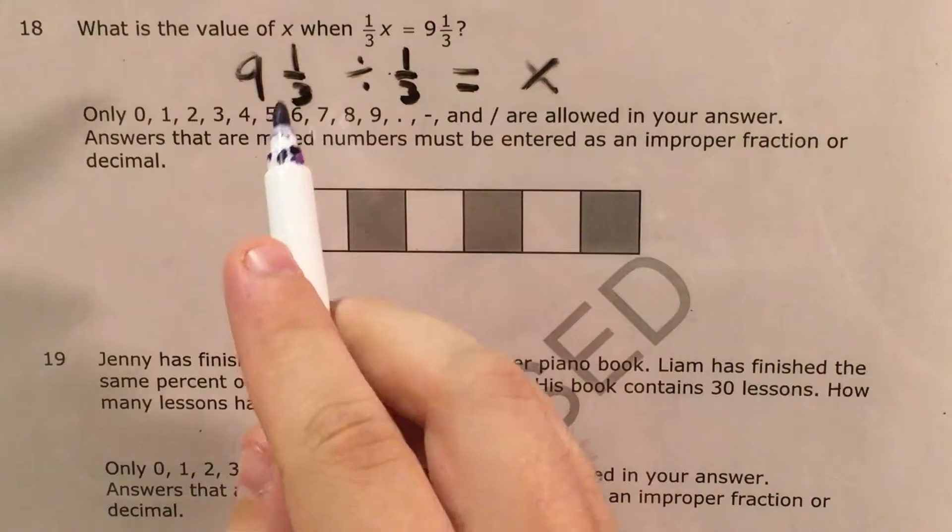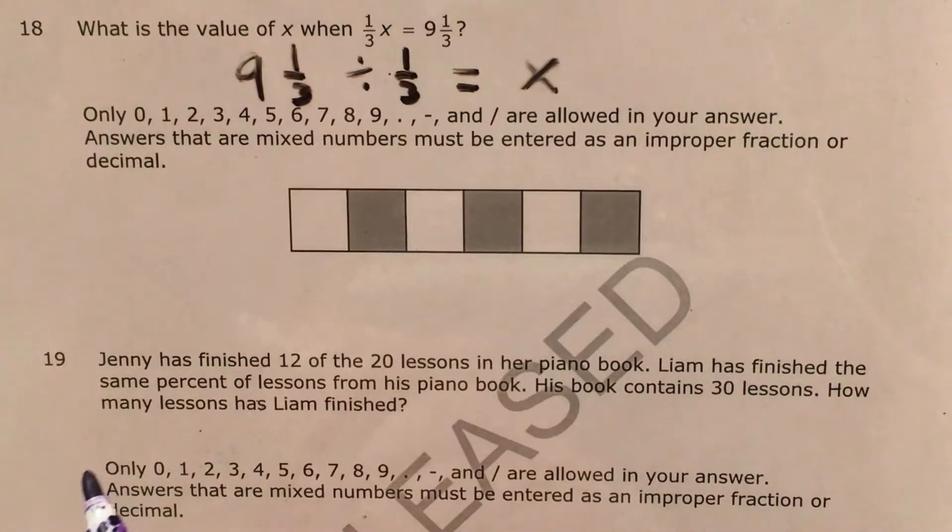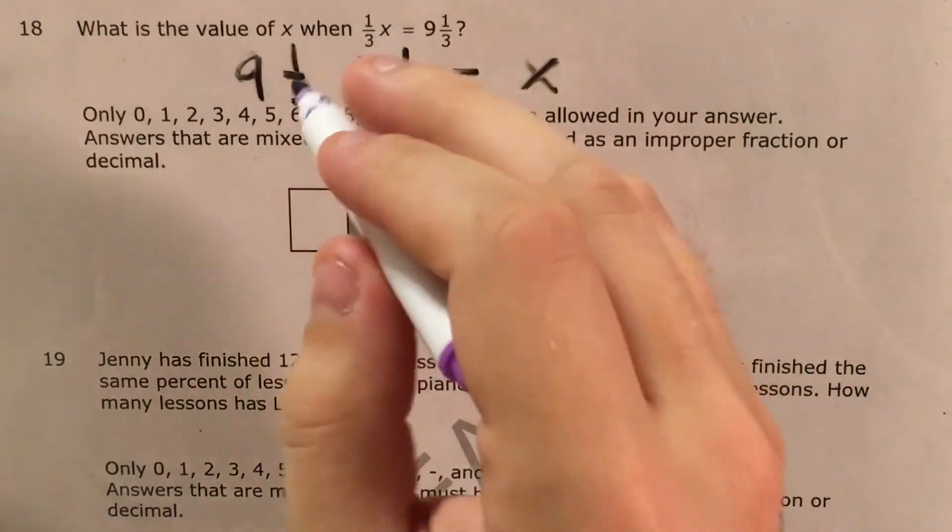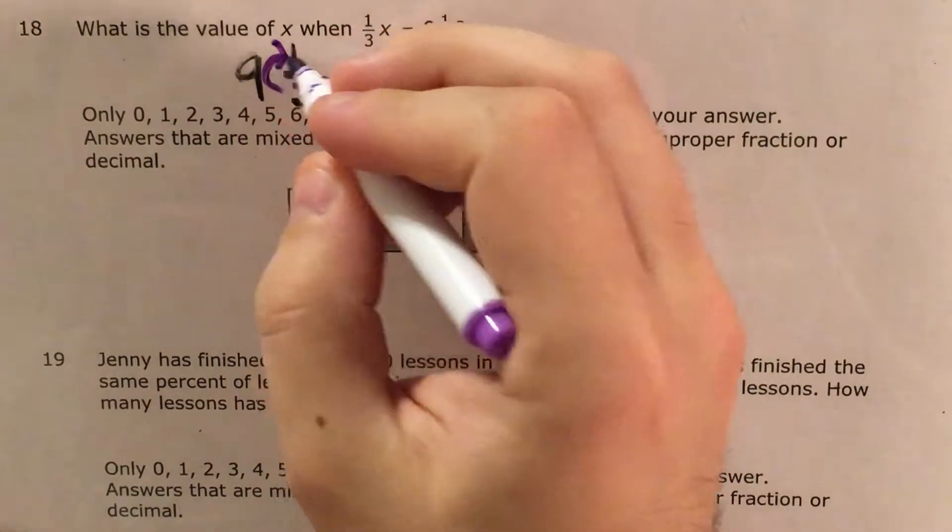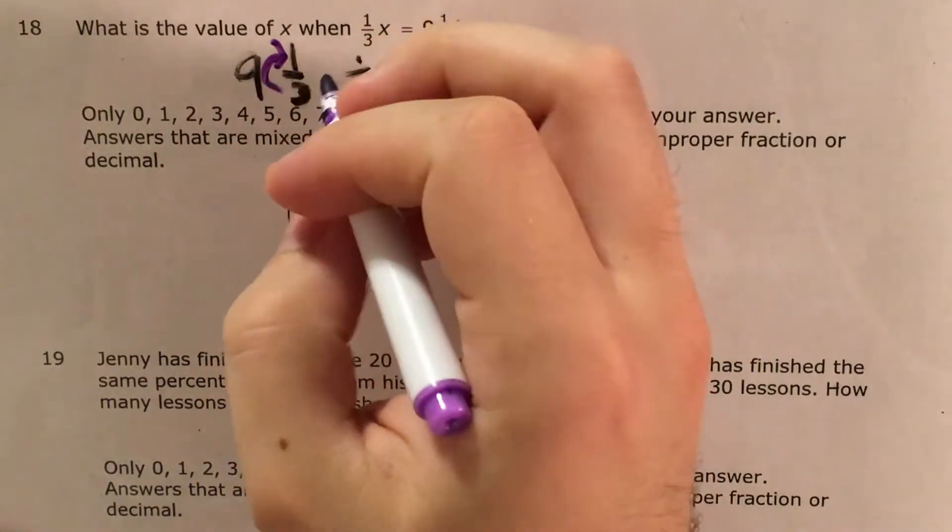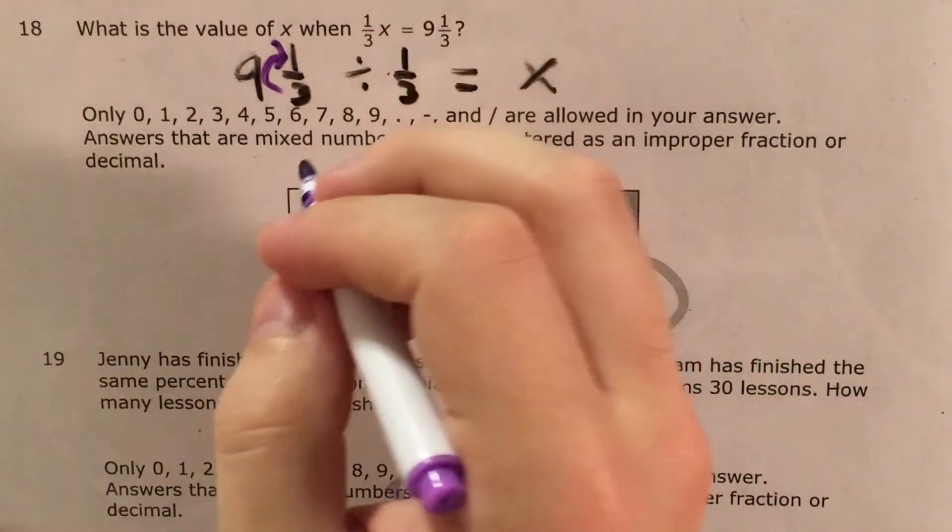So at this point, I can turn this fairly simply into a dividing fractions problem, but first I need to change 9 and 1/3 into an improper fraction. It's already a mixed number.